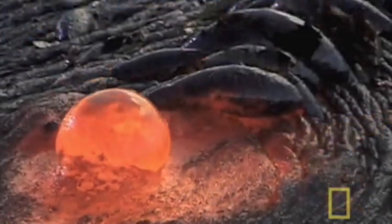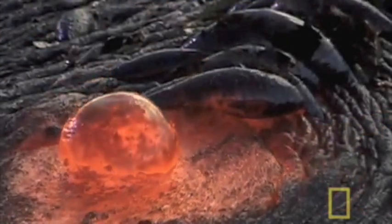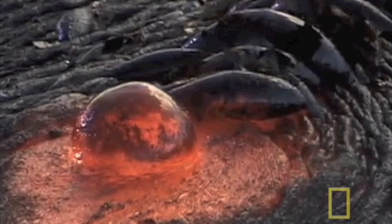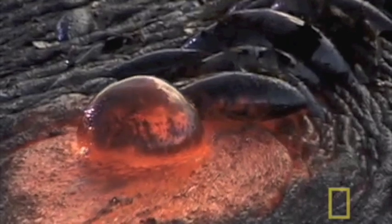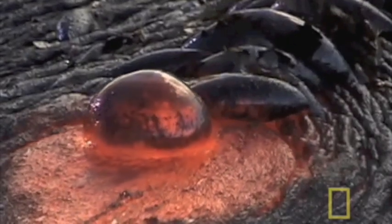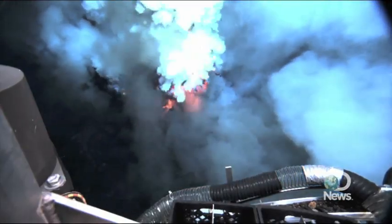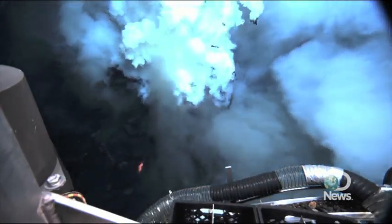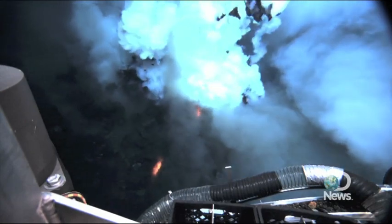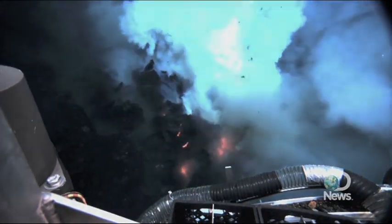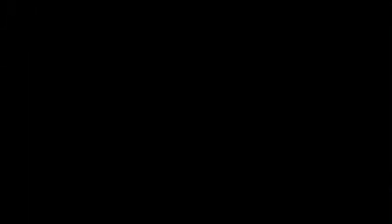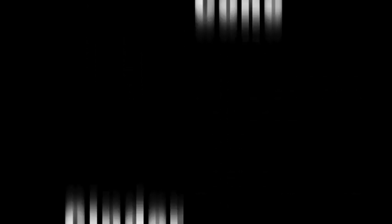One might often see lava bubble. That is because lava and magma contain dissolved gases in them, like oxygen. When magma goes to the surface and becomes lava, the pressure is lighter and the dissolved gases might escape, causing it to bubble.